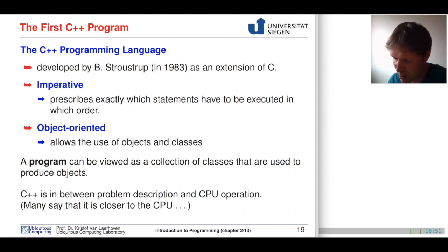A program can be an object-oriented class, or object-oriented programming be seen as a collection of classes, and those produce objects. C++ is in between the problem description and the CPU operation, so the central processor unit operation. However, many say that it's closer to the hardware, because in C++ you have to think about the representations of certain things the way they actually are represented in memory, in your processor, in your computer.